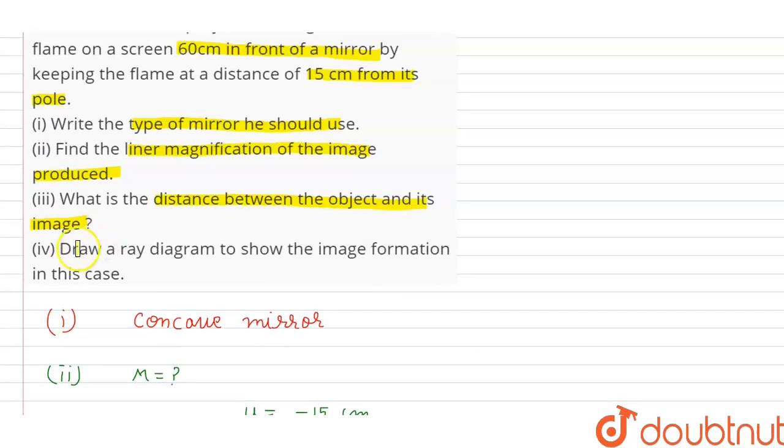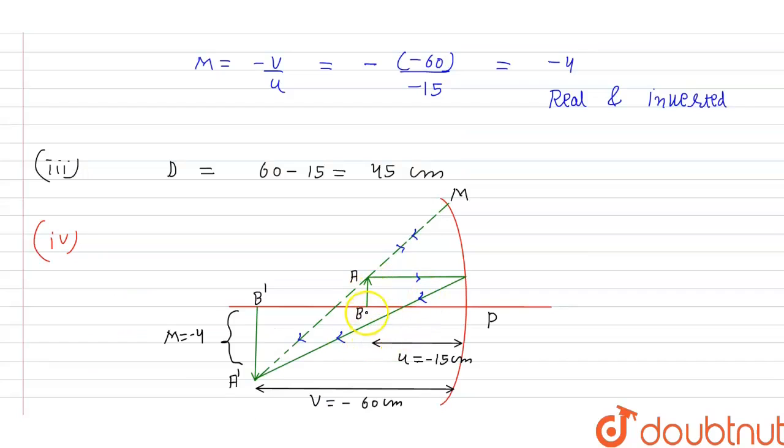Part 4: Draw a ray diagram to show the image formation in this case. This is the ray diagram. Object is at distance 15 cm and image is at distance 60 cm and it is magnified by minus 4.